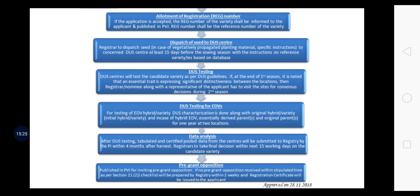For DUS testing of essentially derived varieties: the testing of an essentially derived variety — whether a hybrid or variety — involves DUS characterization done along with the original hybrid or variety. In case of a hybrid essentially derived, the essentially derived parent and original parent are tested for one year at two locations. After DUS testing, tabulation and certified pooled data from the centers will be submitted to the registry by the Program-in-Charge within four months after harvest. The Registrar is to take final decisions within the next 15 working days on the candidate variety.